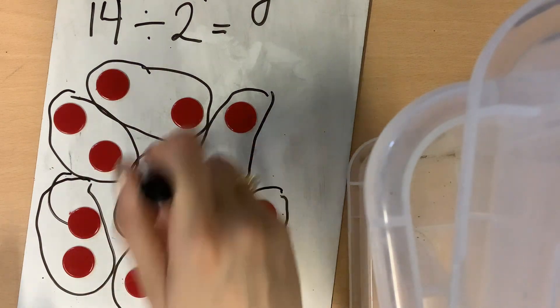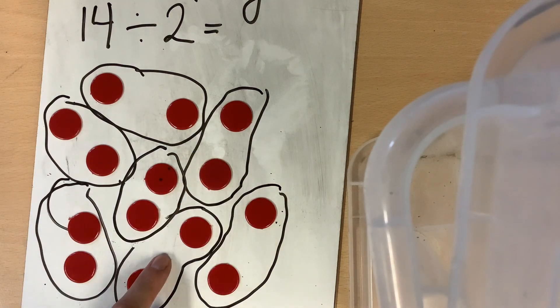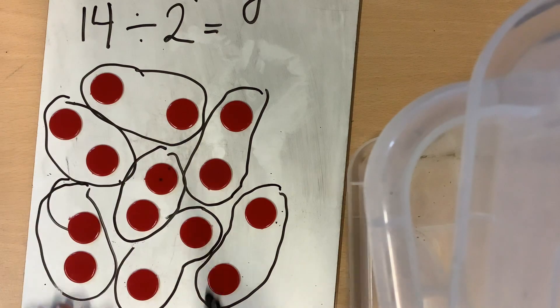How many groups are there? Let's touch them. One, two, three, four, five, six, seven.